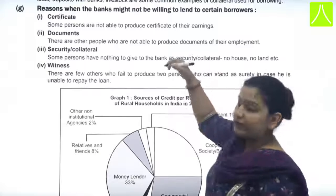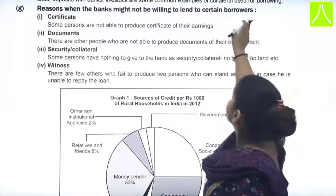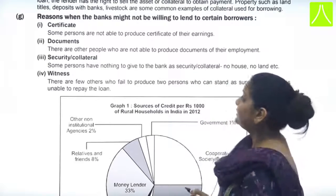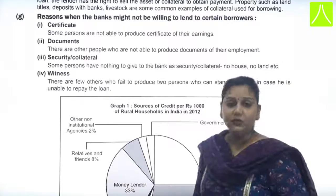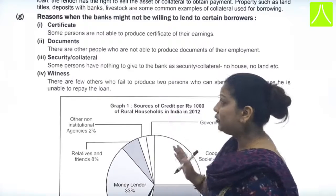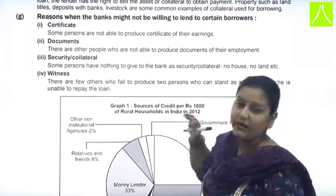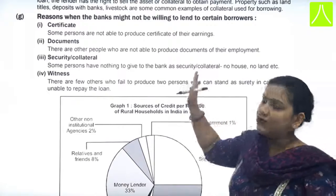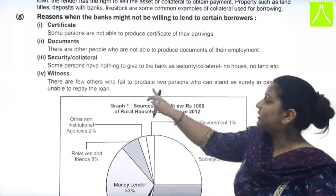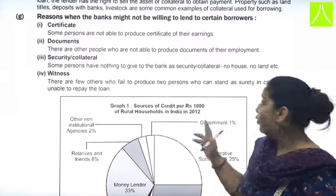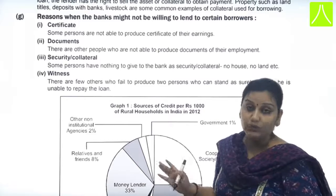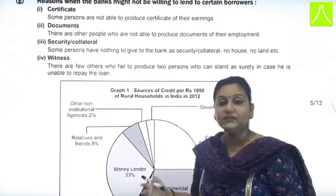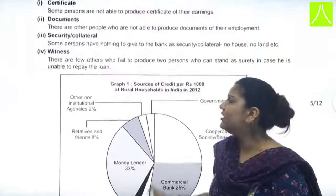There are certain reasons why banks might not be willing to lend to certain borrowers. If there is any deficiency in your documents, you will not be given a loan. Many people cannot produce an income certificate, which is important, so the bank will not give a loan in that condition either. If your collateral does not substantiate your income or the loan amount, you will also not be given a loan. Additionally, some people fail to produce two persons who can stand as surety in case they are unable to repay — many people who have committed fraud find no one willing to stand as witness for them.